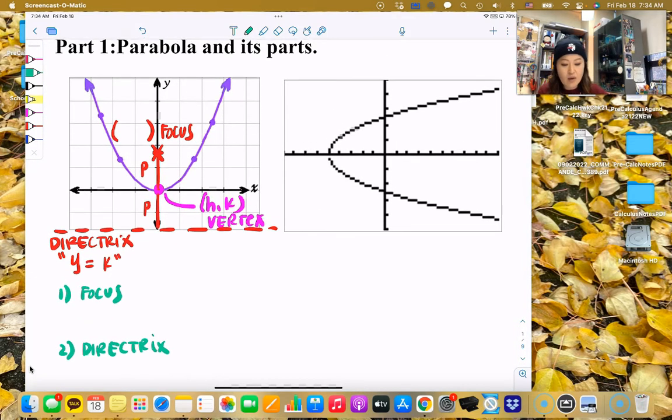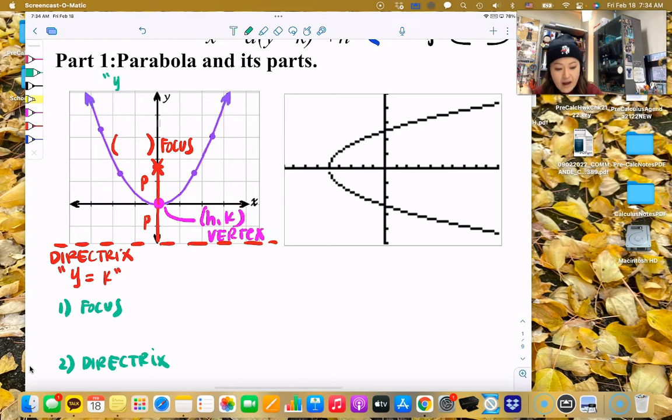So one, we have a focus, and we've already labeled that, and we also have the fixed line, which is called the directrix. Now, because this is, watch this, this is an x-square parabola. I call this guy the x-square parabola. So you know it's going to smile or frown.